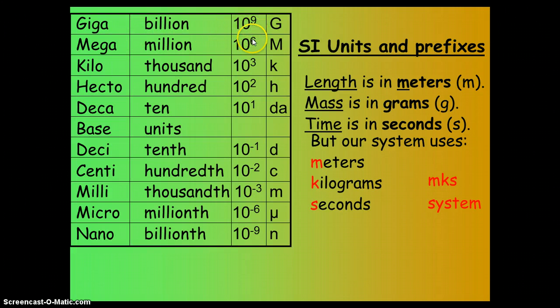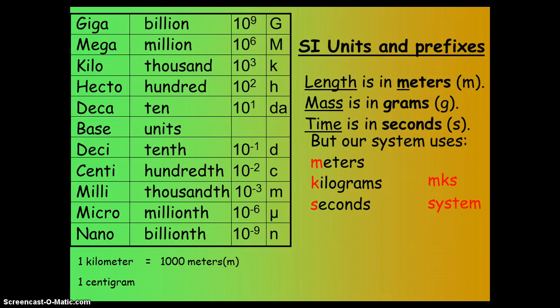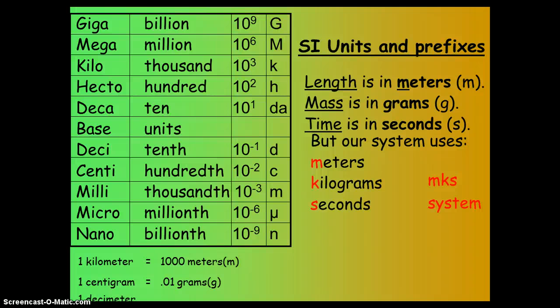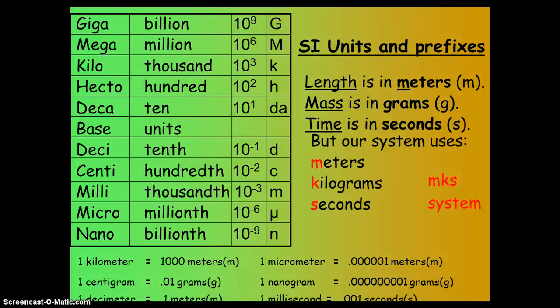Here's the scientific notation for each prefix in this column here. And then these are the symbols for the prefixes. So if you see a G in front of some other unit, you know that it's talking about giga, which is a billion. Here's a few examples. In one kilometer, there's a thousand meters. In one centigram, there's 0.01 grams, because that's one divided by a hundred. A decimeter is 0.1 meters. A micrometer is one divided by a million. Nano is one divided by a billion, so it's even tinier. And a millisecond is one divided by a thousand.